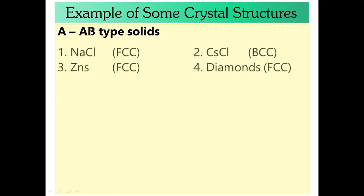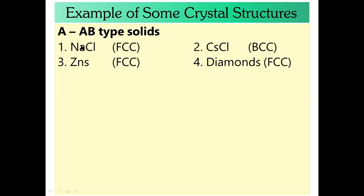In AB type solid, we are going to study four examples: NaCl, CsNA (cesium chloride), CaS, and Diamond. To study NaCl, ZnS, Diamond — the next step is the FCC ionic solids. In AB type, there are four parts.